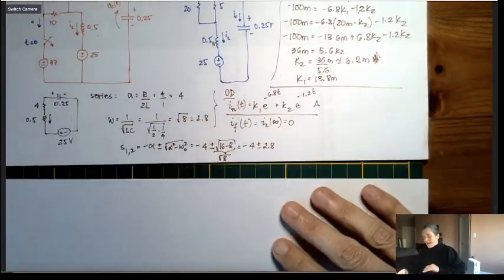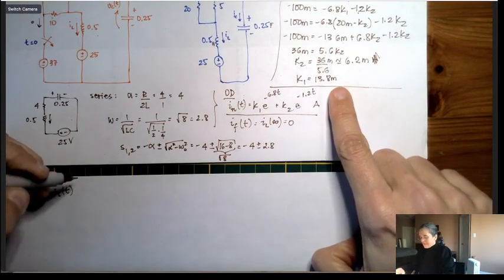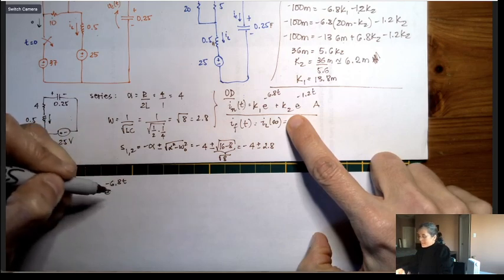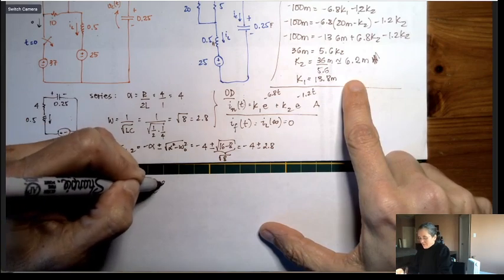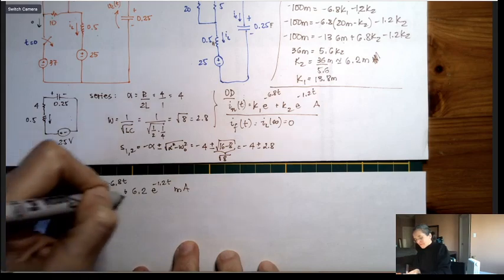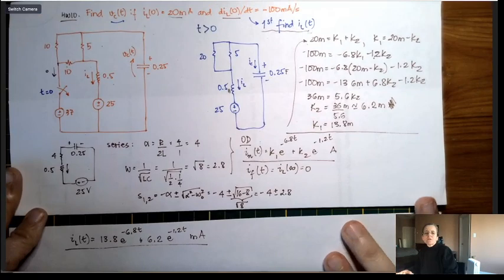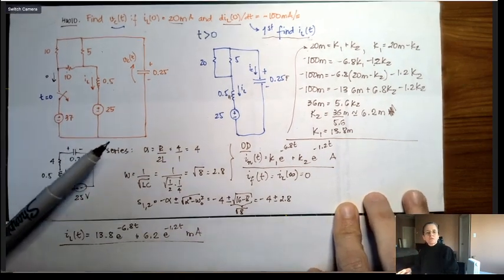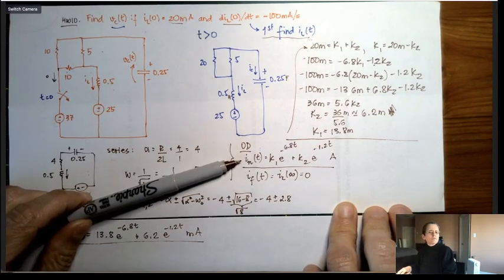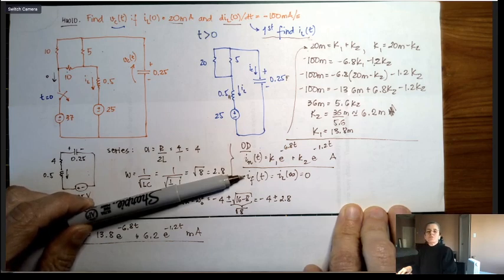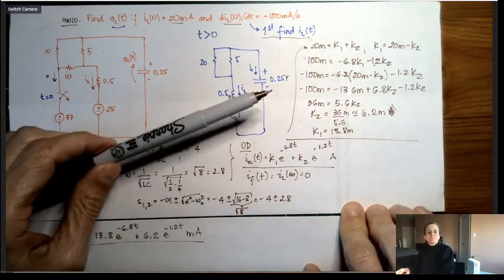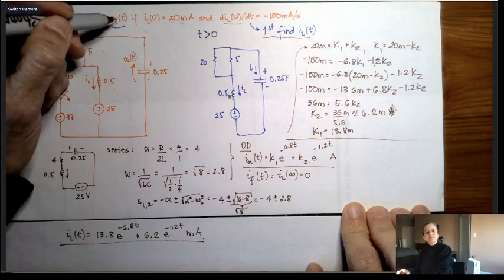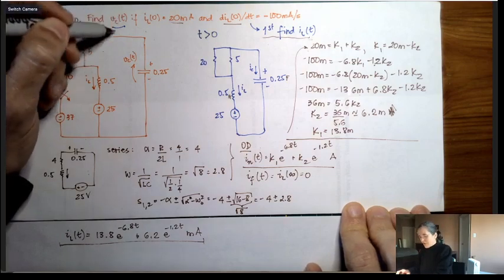We can now write the inductor current: IL(t) = 13.8·e^(−6.8t) + 6.2·e^(−1.2t) milliamps. This is still not the final answer, but finding IL(t) gets you about 80% of the way. On a 20-point exam question, showing the overdamped form, the forced (particular) solution, adding the two, finding the coefficients, and writing IL(t) is the main achievement for this circuit.